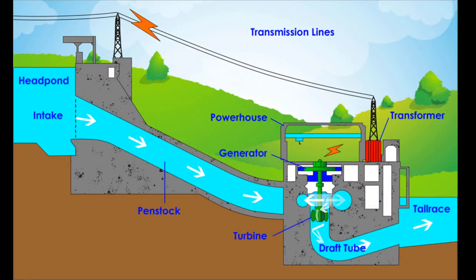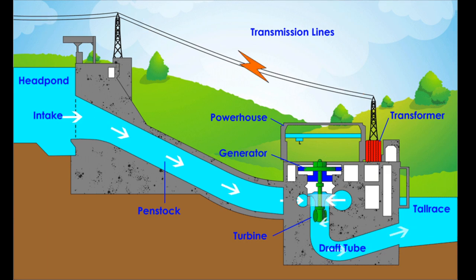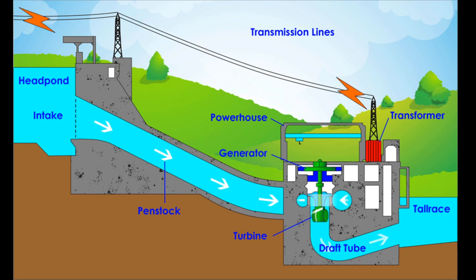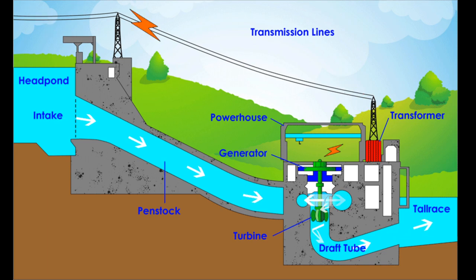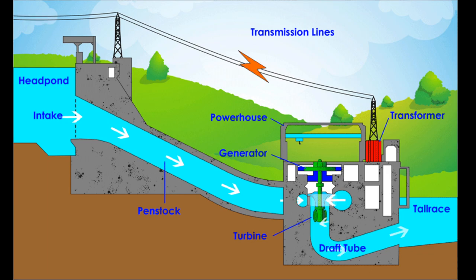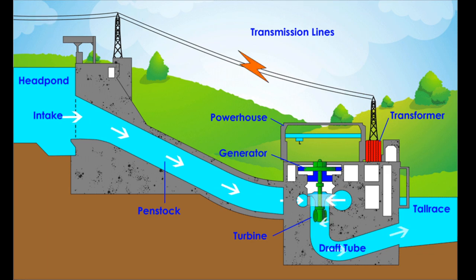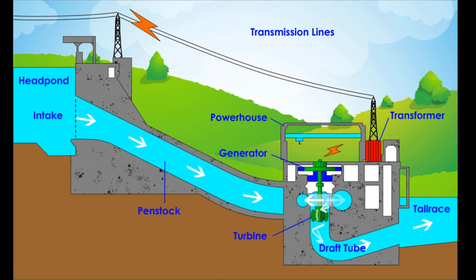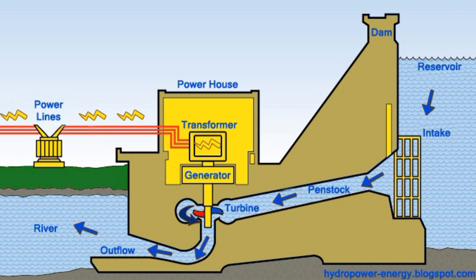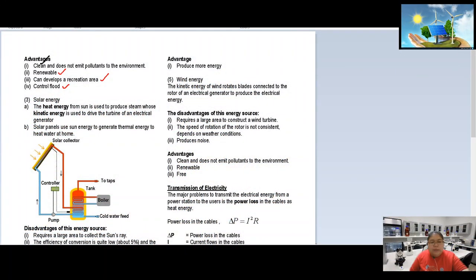Looking at the hydro power station diagram: water is stored at a high location. When the headbond is opened, water comes out at high speed with high kinetic energy to turn the turbine. The turbine connects to a transformer and generator to produce electricity. The water must be stored at a high location, released to come down and turn the turbine.